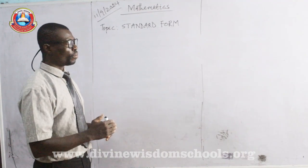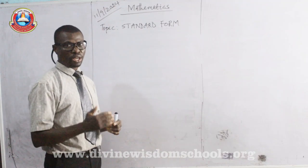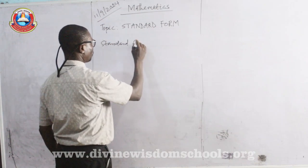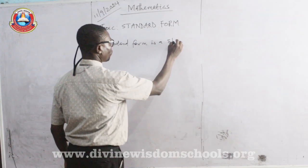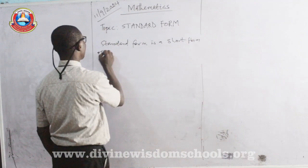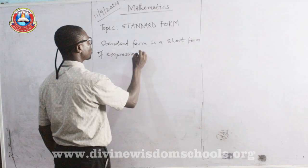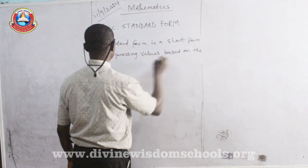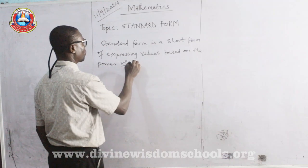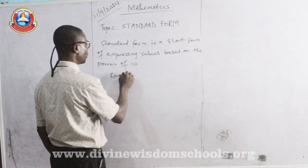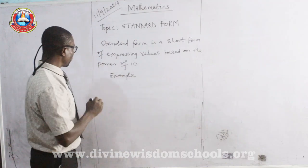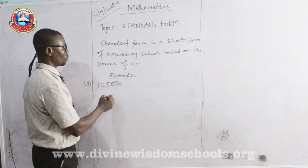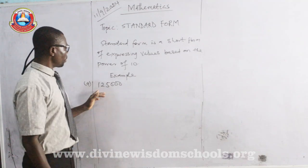Standard Form is a short form of expressing values based on the power of 10. For example, if you have figures like 1, 2, 5, 0, 0, 0. I am being asked to express this number as it is in Standard Form.